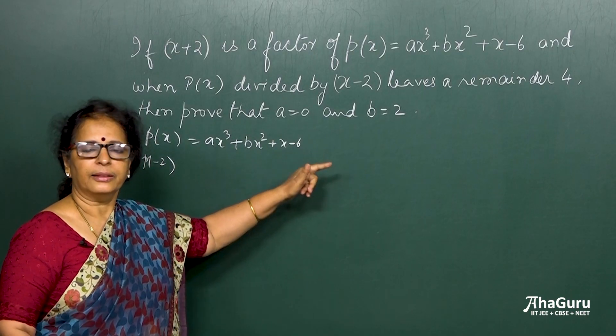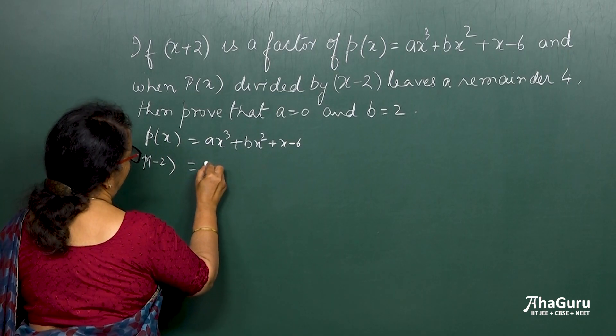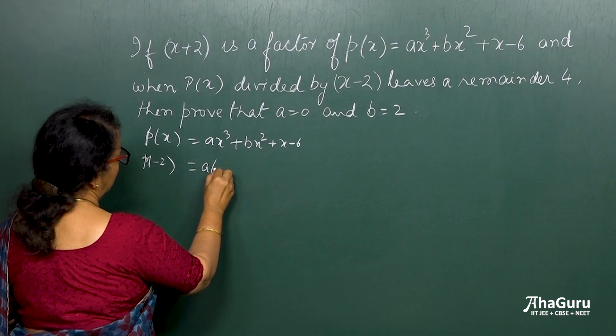So that means p of minus 2. So wherever I have x, that should be equal to minus 2. So this a, what is x minus 2, what is it?